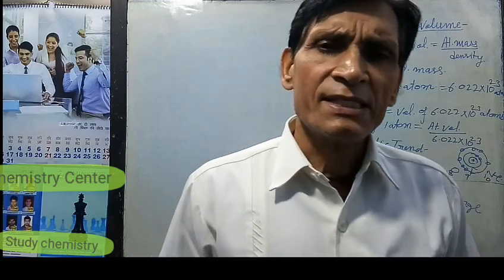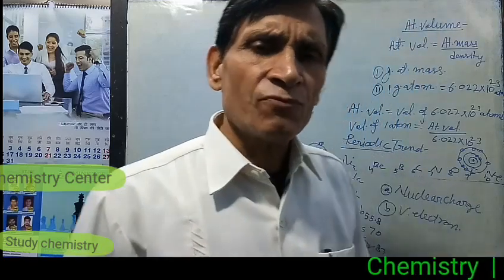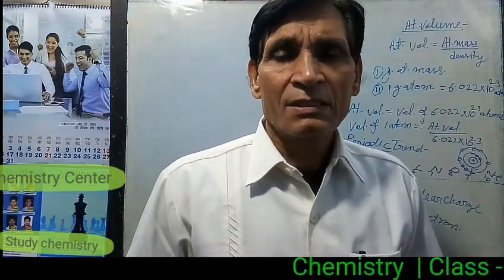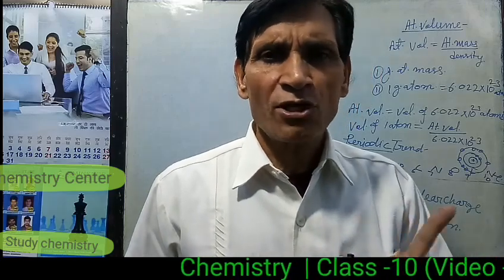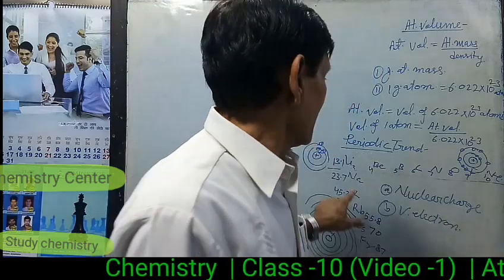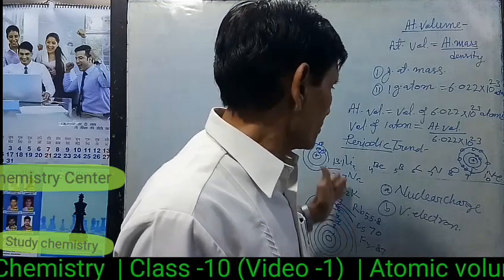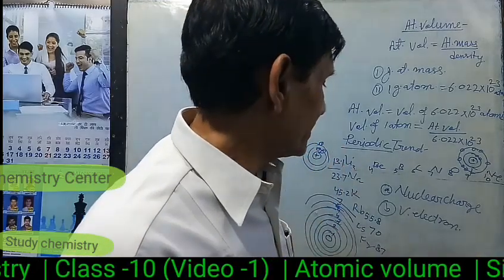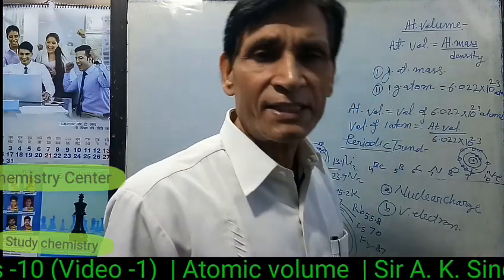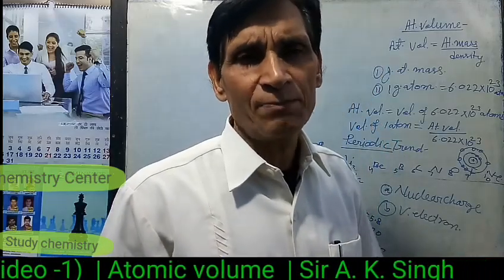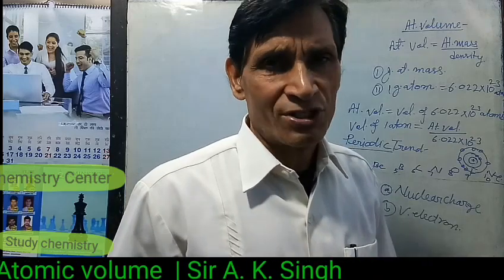We can now explain why atomic volume is a periodic property but density is not. Atomic volume shows almost gradual variation down the group and in the periodic table, but density does not show such regular variation.